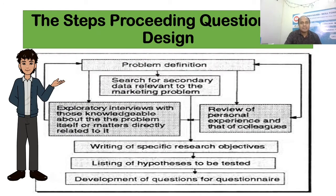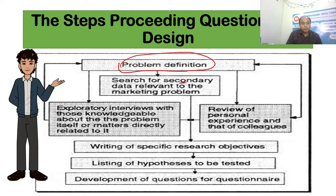The steps preceding questionnaire design should look like this. First, you need to define your problem — the problem statement is the first part you will put in your research design. Then the researcher will decide whether to go for secondary data, for example addressing a marketing problem, or to achieve primary data. Exploratory research is more or less a qualitative study directly related to your interviewees' knowledge and experience, while quantitative study may require collecting numerical data. This involves writing a specific test objective, listing the hypotheses you are going to test, and then developing questions for the questionnaire.